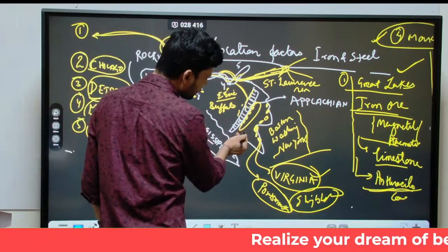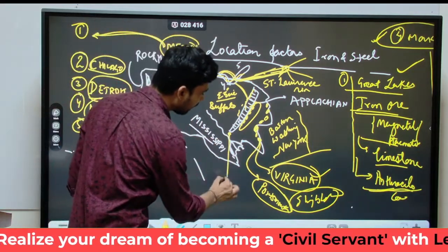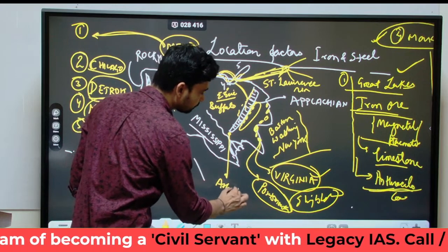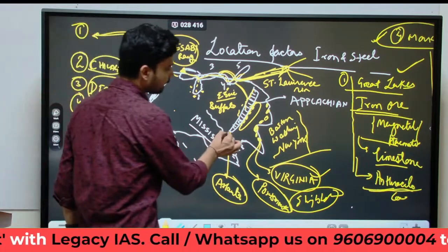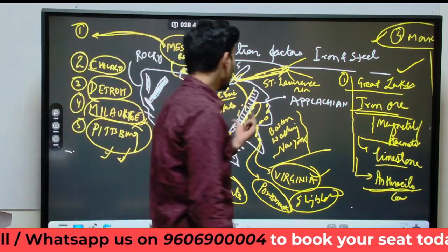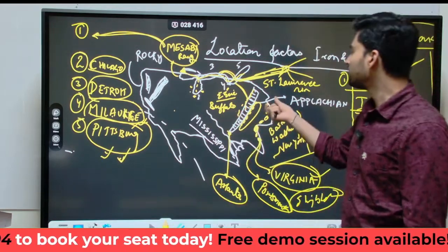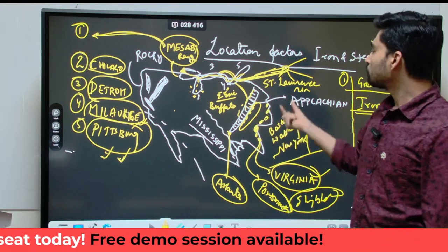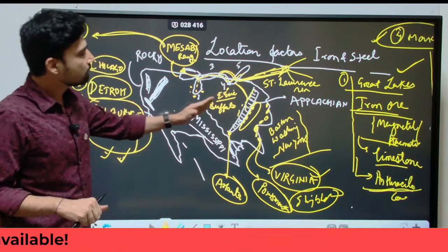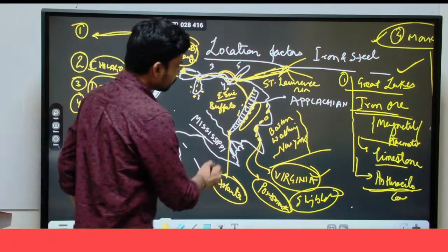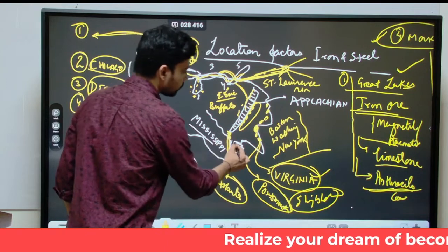Coming to the southern part of the Appalachian Mountain, we have the city of Atlanta, where iron and steel industry has also developed. Some major coal-producing centers in the Appalachian region include Carbondale and Scranton. The third region is situated around the Mississippi Delta River area near Atlanta.